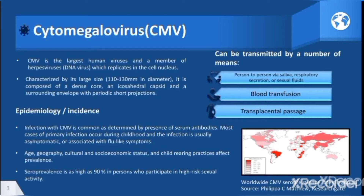Cytomegalovirus, or CMV, is the largest human virus and a member of the herpesvirus family which replicates in the cell nucleus. It is characterized by its large size. It is composed of a dense core, an icosahedral capsid, and a surrounding envelope with periodic short projections.